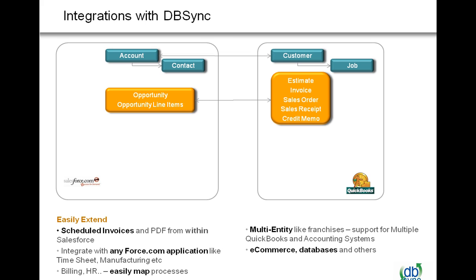An opportunity and opportunity line items taken together create transactions such as estimates, invoices, sales orders, sales receipts, and credit memos. And since this is a bidirectional sync, information moves from one system to another so you get a complete understanding of your business and everyone is on the same page. That information is going to be integrated on both systems — that's the wonderful thing about using dbSync.